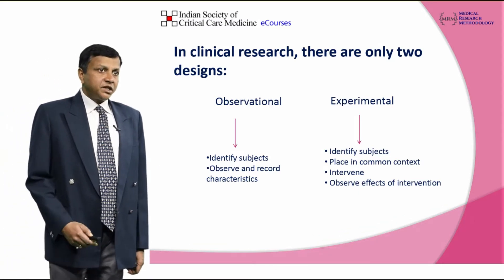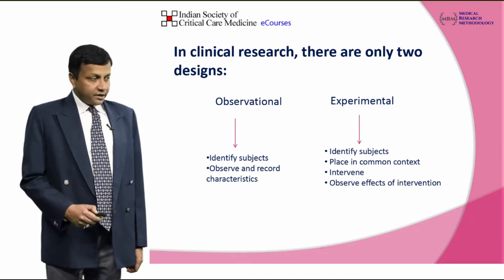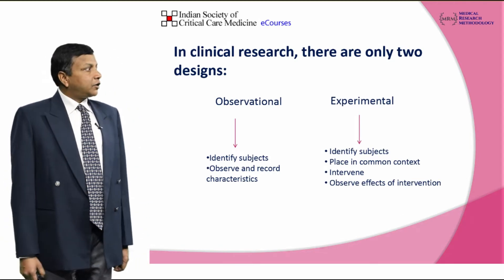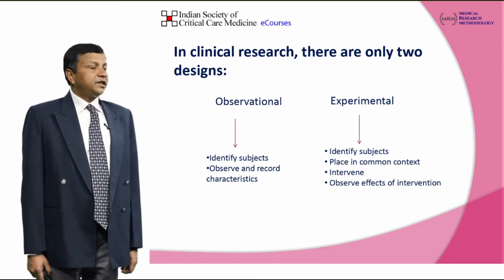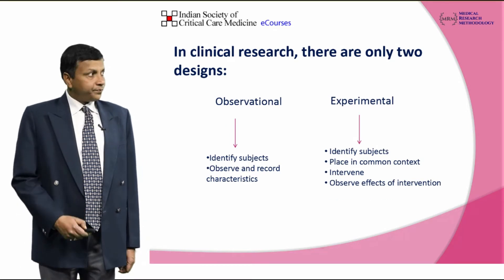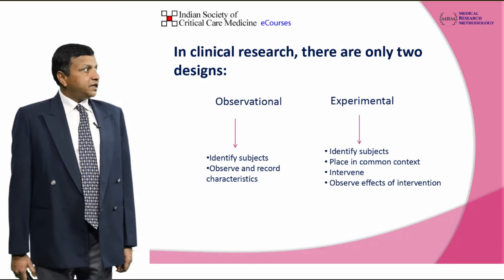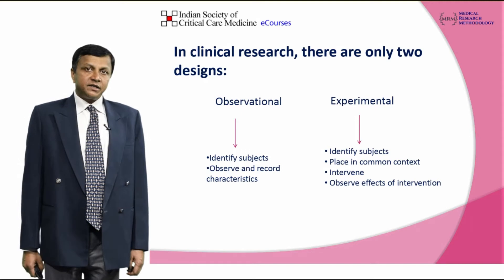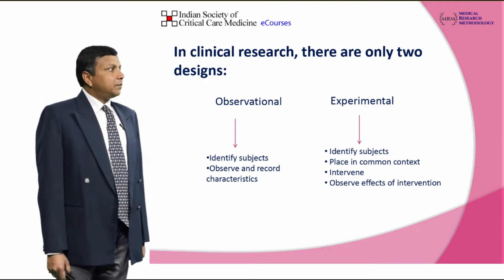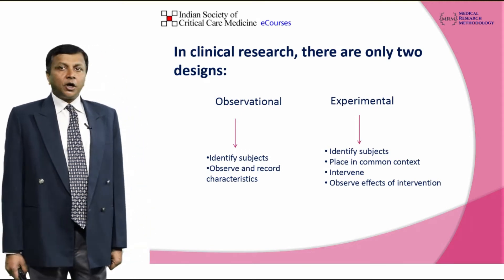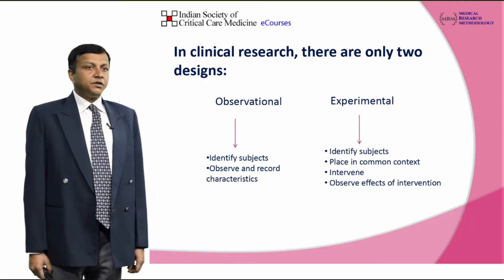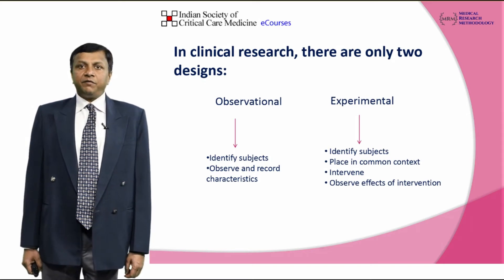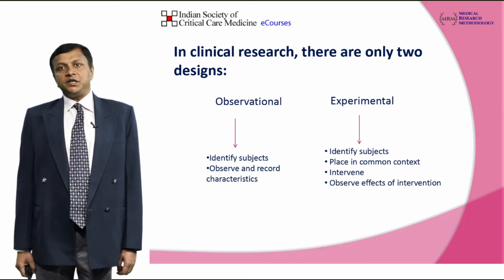In an observational study, the researcher identifies subjects and records their characteristics after observing them. Whereas in experimental research, the researcher identifies subjects, places them in a common context, does some intervention, and observes the effect of such an intervention.